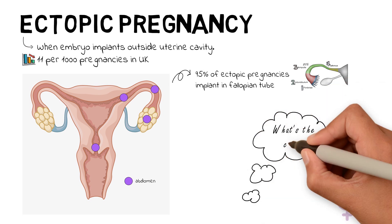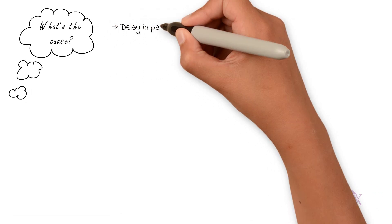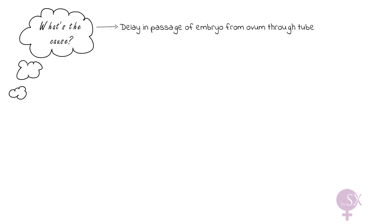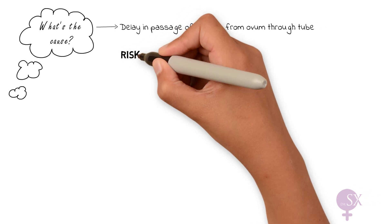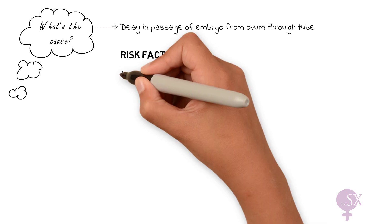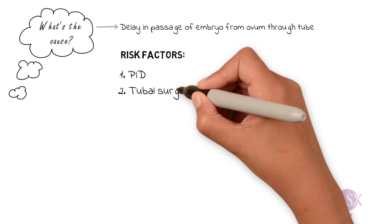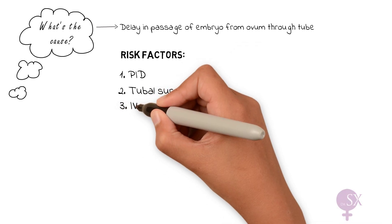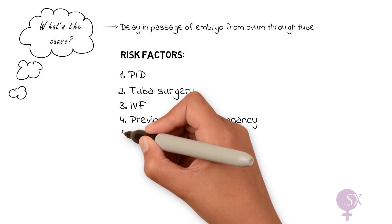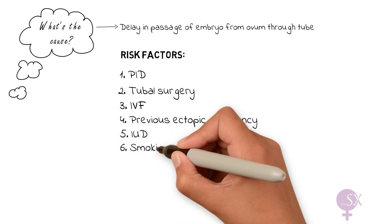What causes an ectopic pregnancy? This is due to a delay in the passage of an embryo from the ovum through the tube. There are some possible risk factors which may be associated with this, including pelvic inflammatory disease, tubal surgery, in vitro fertilization, a previous ectopic pregnancy, an intrauterine device, and smoking.